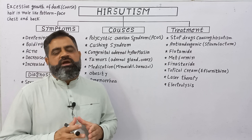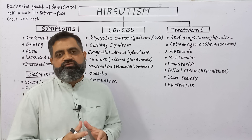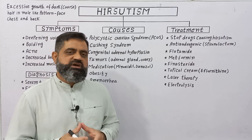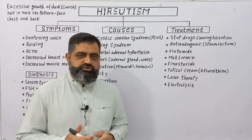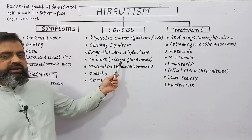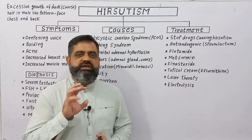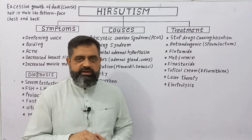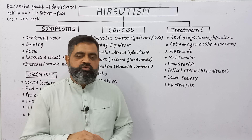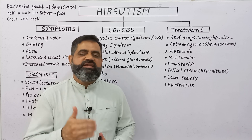Congenital adrenal hyperplasia is a condition in which the adrenal gland produces too much androgen — male hormones — inside the female body, which can produce hair on the face, chest, back, and thighs, causing hirsutism. Tumors in the adrenal gland and ovary can also disturb hormone levels, especially androgens from the adrenal gland and FSH and LH produced in the ovary, and the imbalance of these hormones can lead to hirsutism.